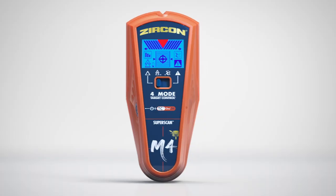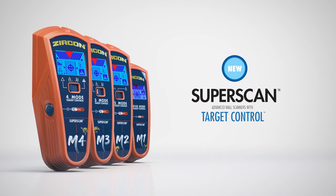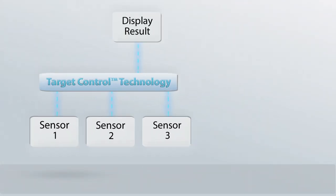The all-new Zircon SuperScan Advanced Wall Scanners solve these problems with first-of-its-kind target control technology. Multiple sensor streaming data combined with sophisticated intelligence results in greatly enhanced performance and safety. Just like your car's black box, Zircon delivers reliable results.